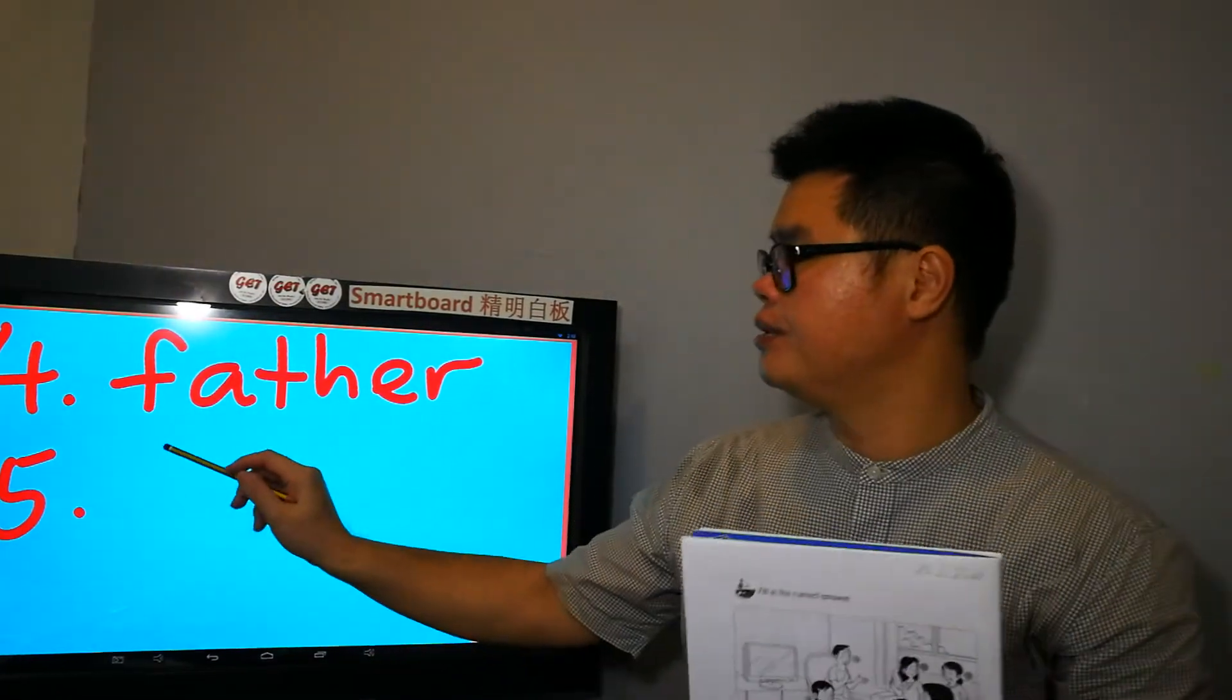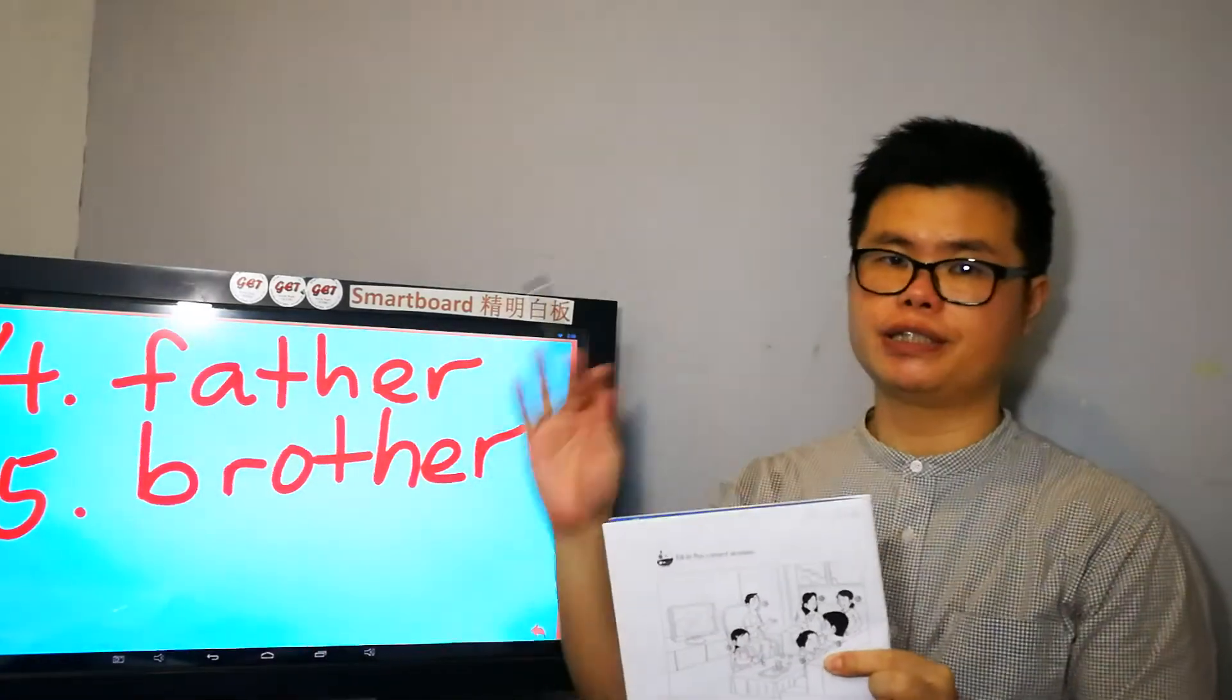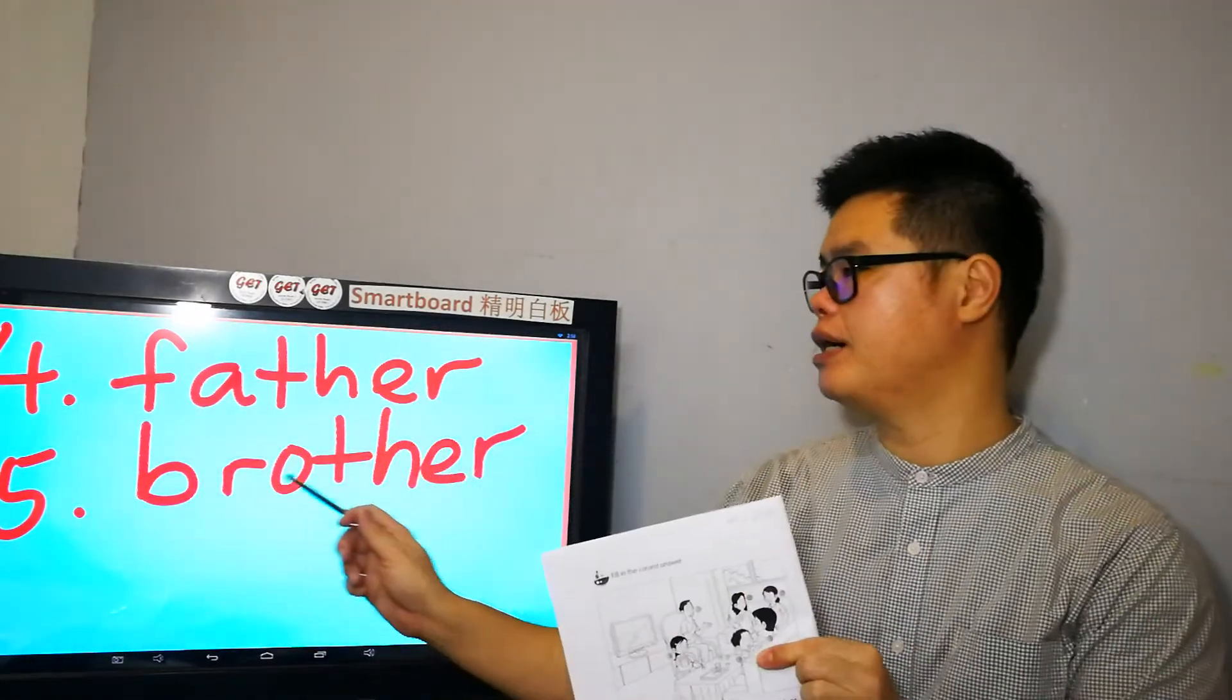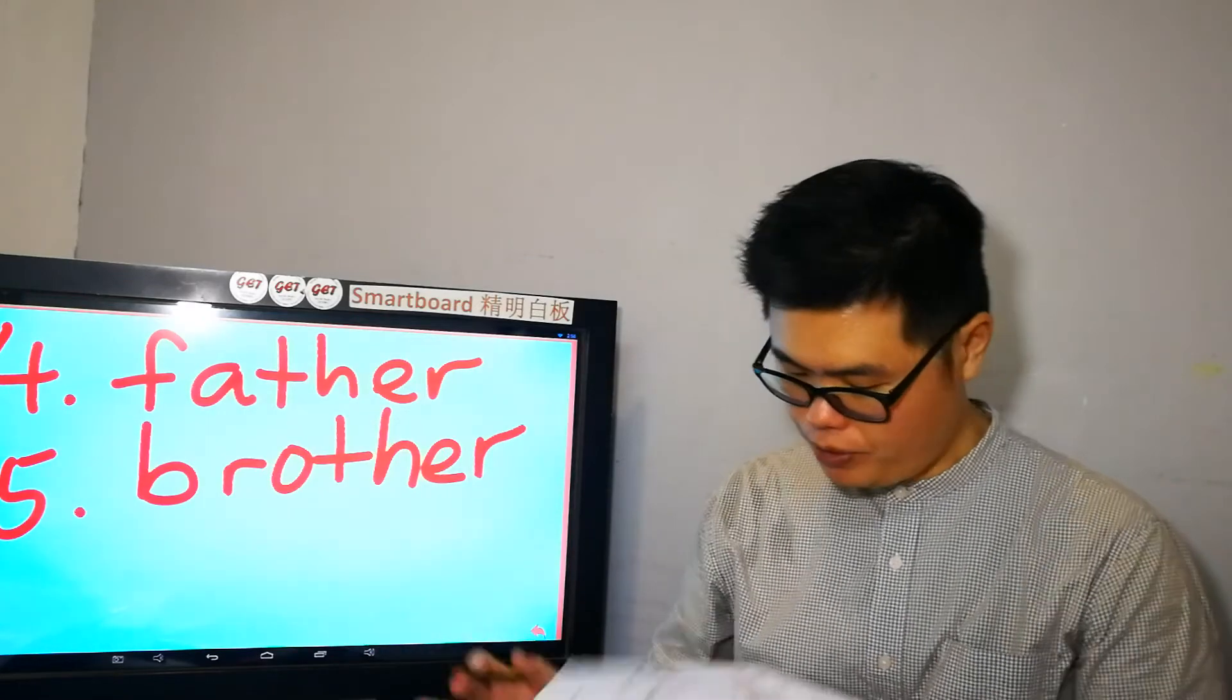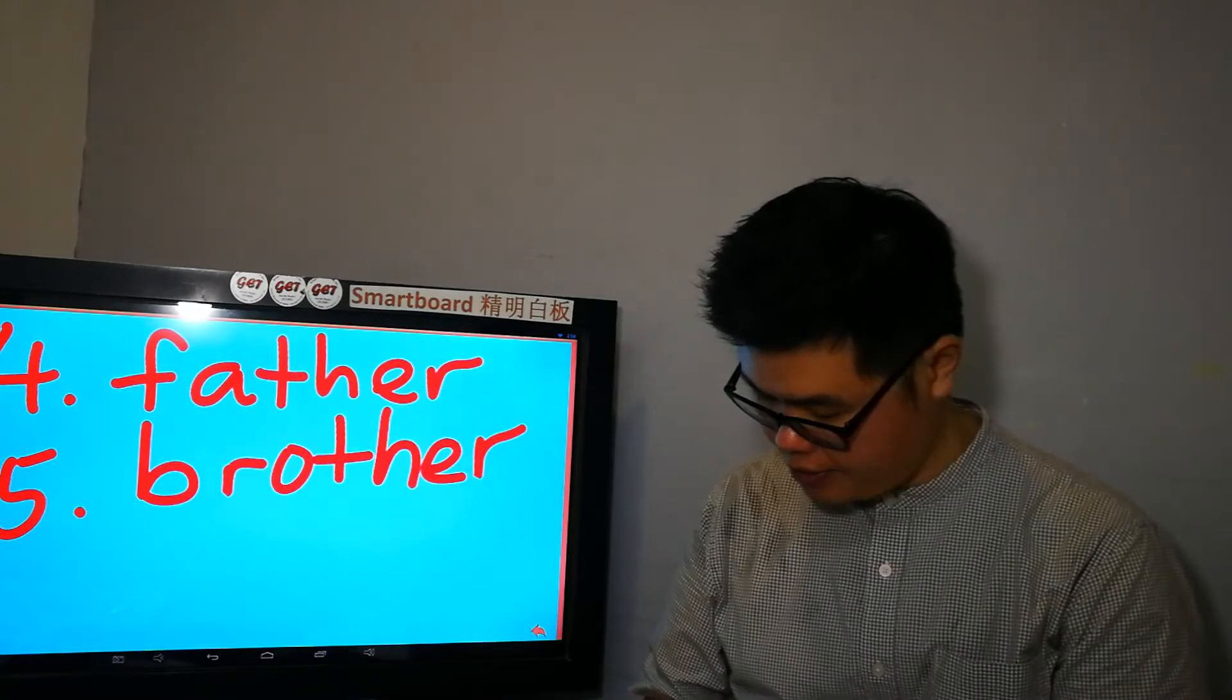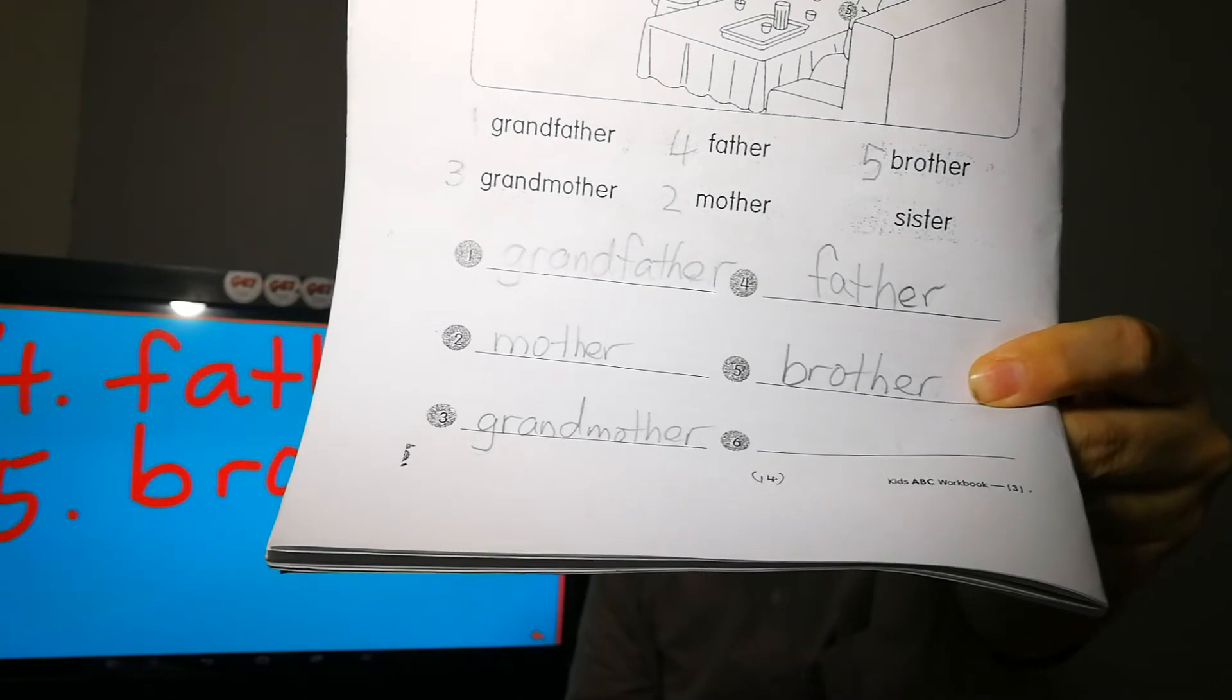Five. Number 5 is a boy. Yes, boy is brother. Brother. Brother. Brother. 兄弟. Sini tulis nombor lima. Please write five. Number five. Alright? Brother. Brother. Alright? Brother. Brother.